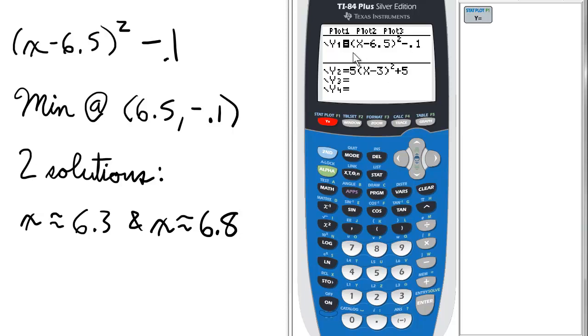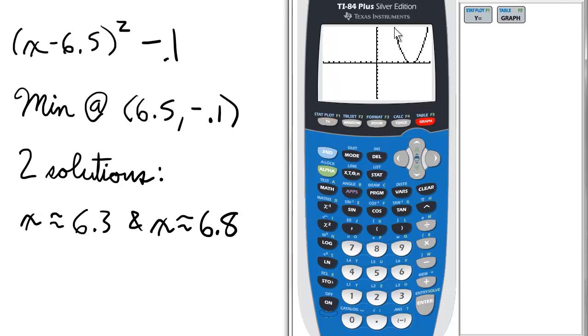For example, in this function, x minus 6.5 quantity squared minus 0.1, you look at the graph, looks like it doesn't really cross the x-axis.